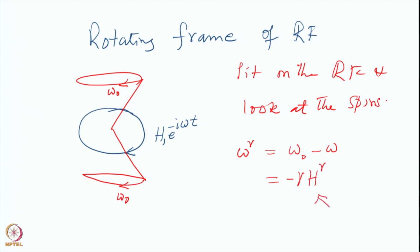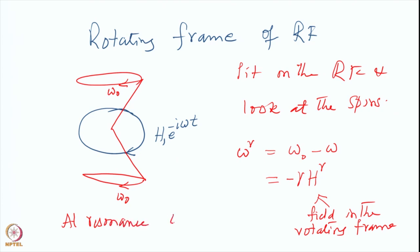If I sit on the RF and look at the spins, it will appear that the spins are moving with frequency omega-naught minus omega. If I want to consider this as a magnetic field, just as omega-naught equals minus gamma·h-naught, omega_r will also equal minus gamma times another field h_r — the field in the rotating frame. We can keep changing omega, slowly change it and see if we match the resonance condition. At resonance, omega-naught equals omega, the spin is stationary, there is no precessional motion, and therefore h_r equals zero.